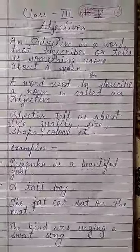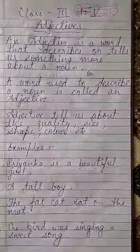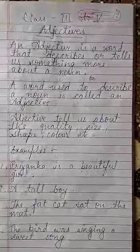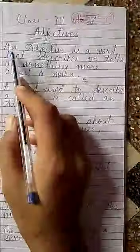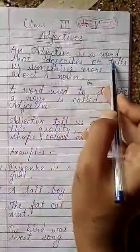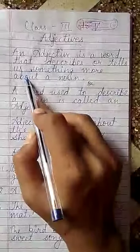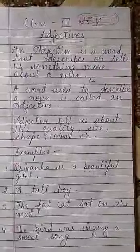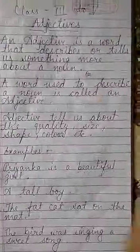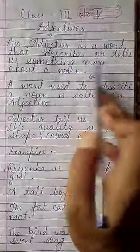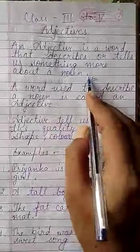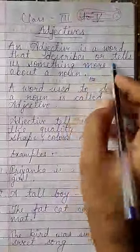Today our topic is adjective. An adjective is a word that describes or tells us something more about a noun. Adjective kya hai? Adjective is a word which we use to describe a noun, which tells us what the noun is.